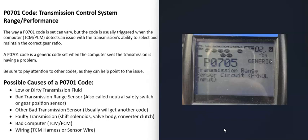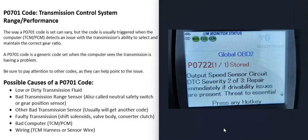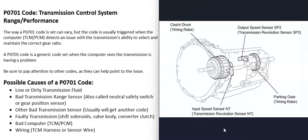The next possible cause is other sensors gone bad, like a bad shift solenoid, clutch solenoid, or similar. Again, usually you'll get another code alongside P0701. For example, if you also get a P0722 (output speed sensor circuit), it's a good idea to go test that output speed sensor and the wiring going to it, because an issue with the output speed sensor could be throwing everything off and triggering the P0701.